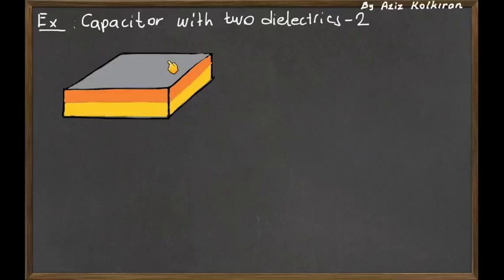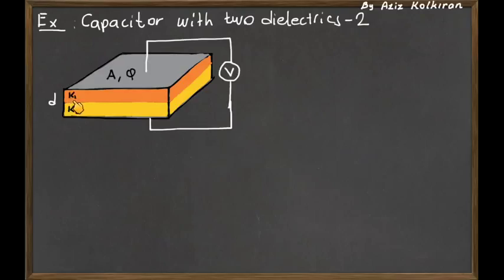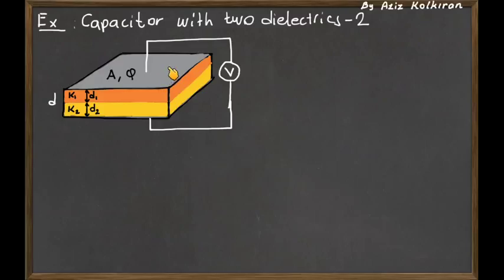We have a parallel plate capacitor, but between the plates we have two different kinds of dielectrics, and they are sandwiched — they are parallel on top of each other. One of the dielectrics has the dielectric constant k1, and the other one has the dielectric constant k2. The total distance between the plates is d, and the thicknesses of each dielectric are d1 and d2. If you apply a potential difference, the upper plate has a higher potential, giving a positive charge q on the upper plate. Let's define the area of one of these plates as A. The electric field inside these different dielectrics will be different — let's call one E1 (for dielectric k1) and E2 for the second dielectric.